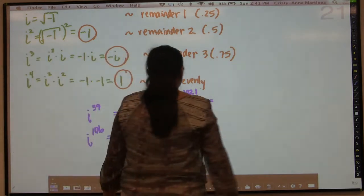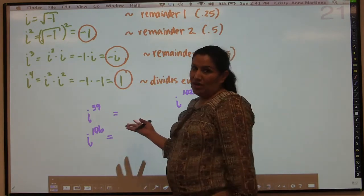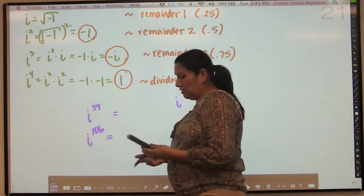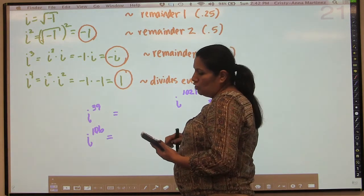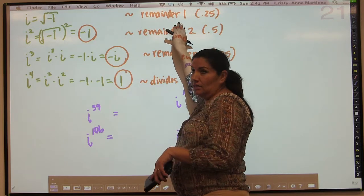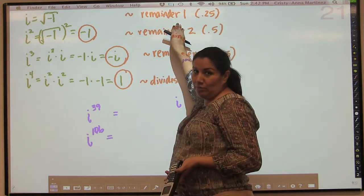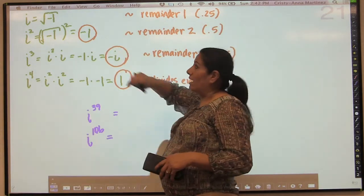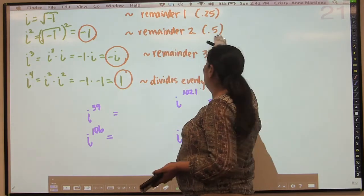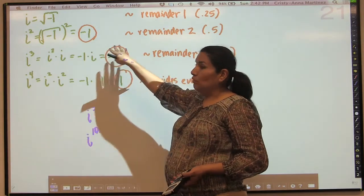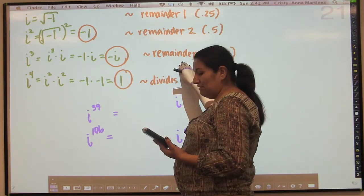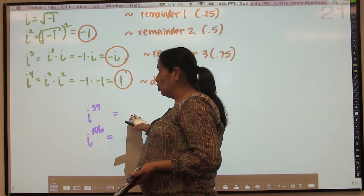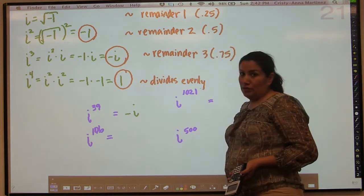So I've given you a way to figure this out. They might ask in your homework: what is i to the 39th power? The easiest thing to do is take your exponent — in this case 39 — and divide it by 4. If you get a remainder of 1, meaning a decimal of .25, it's going to be the same as i. If you get a remainder of 2, meaning .5, it's going to be the same as negative 1 or i squared. If you have a remainder of 3, which is .75 — and 39 divided by 4 is actually 9.75 — that means it's the same thing as i cubed, which means it's negative i. So my answer for i to the 39th power is negative i.